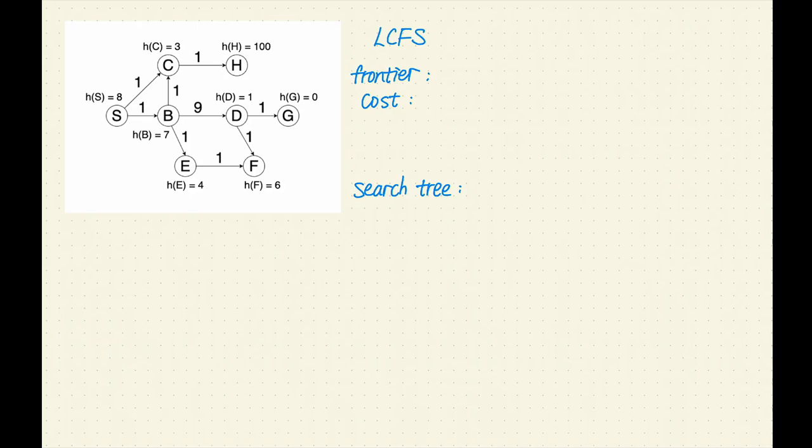Let's recall the tie-breaking rule. If multiple paths have the same lowest cost, I will order the paths by their last nodes and choose the path that comes first in alphabetical order. During this process, I will keep track of the frontier, the cost of each path in the frontier, and the search tree. I will also label the nodes in the order of expansion.